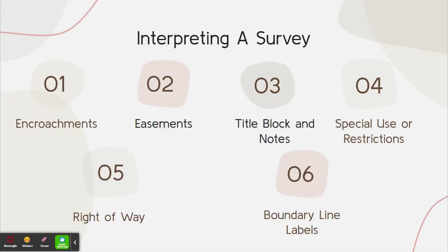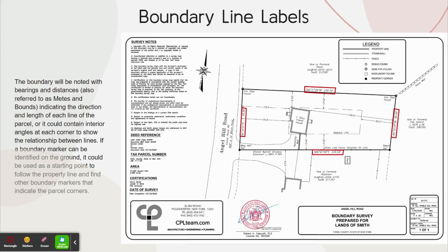Last is your boundary line labels. The boundary will be noted with bearings and distances, also referred to as metes and bounds, indicating the direction and length of each line on the parcel, or it could contain interior angles at each corner to show the relationship between lines. If a boundary marker can be identified on the ground, it could be used as a starting point to follow the property line and find other boundary markers that indicate the parcel corners.